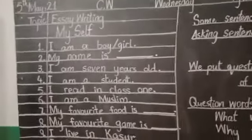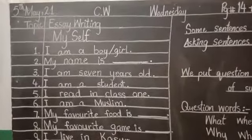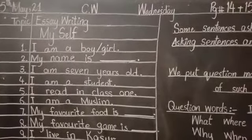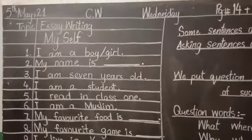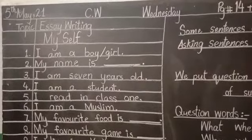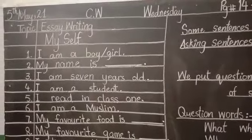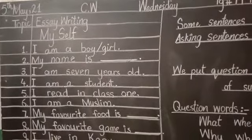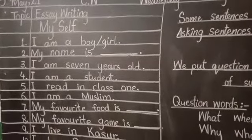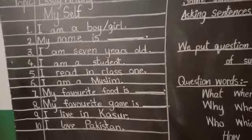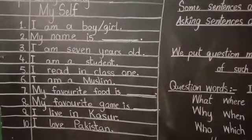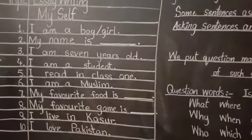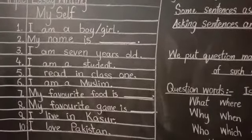In your notebooks, you have to write by yourself. Write the title at the top, then write the date: 5th May 2021, Wednesday. Write 'Classwork', and the topic is essay writing — 'Myself'. Write the title in English at the top. There are 10 sentences to write.